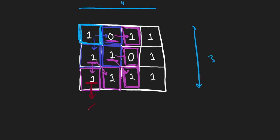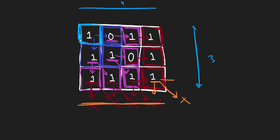Starting from each cell, we check below, diagonally, and to the right. We've already visited some of these, so we skip them. As we continue the process, we start to reach the base cases — cells at the boundary where there's nothing below, nothing diagonally, or nothing to the right. For those boundary cells, we return zero because there are no valid cells in those directions.